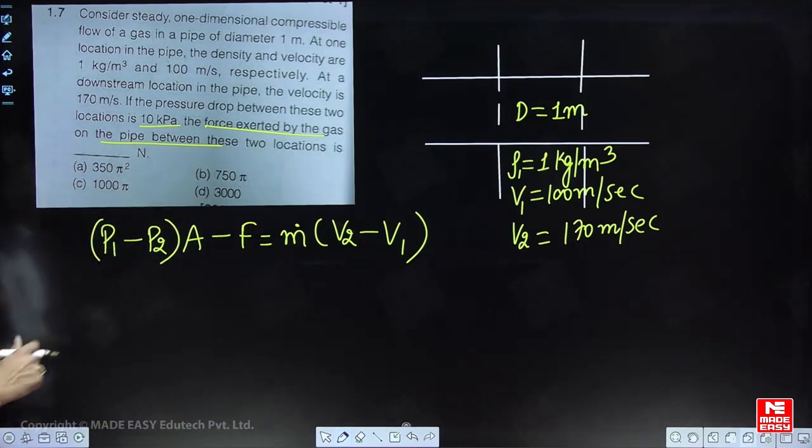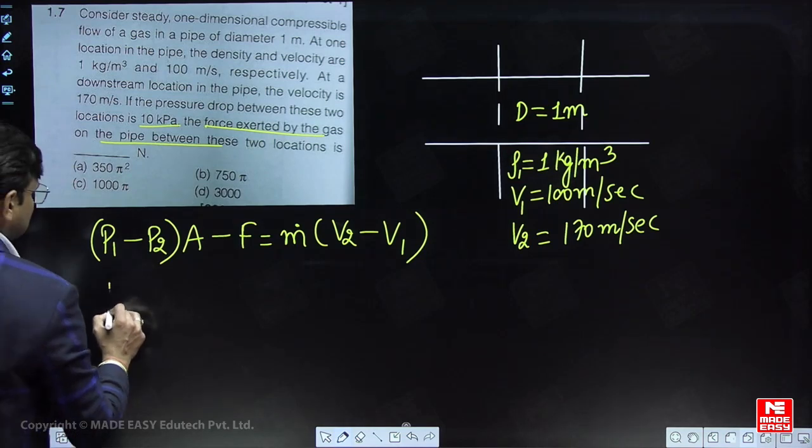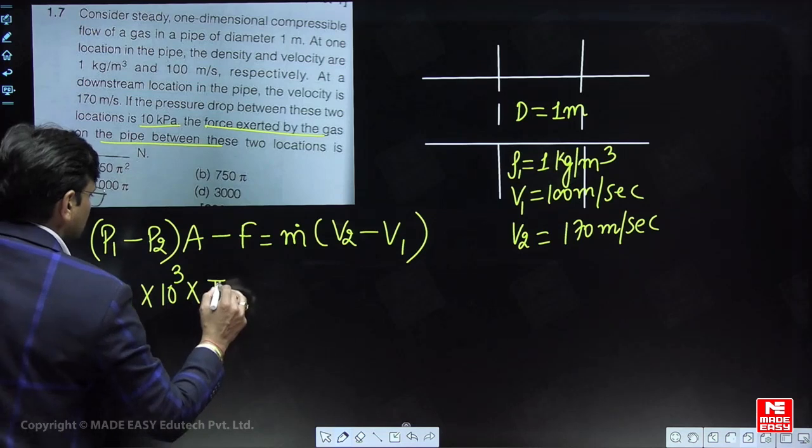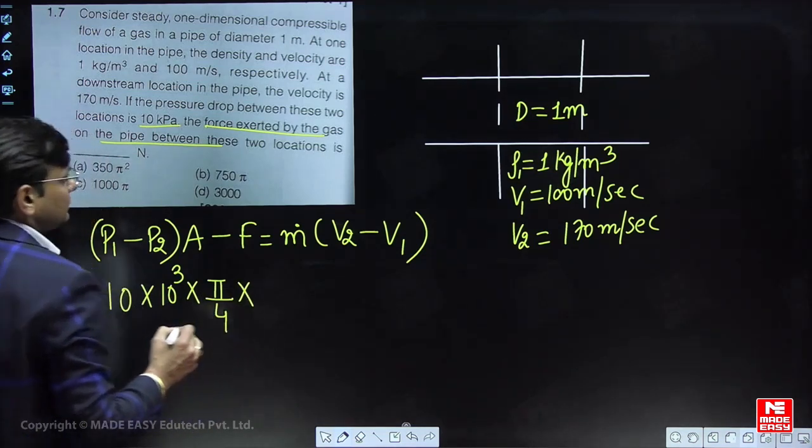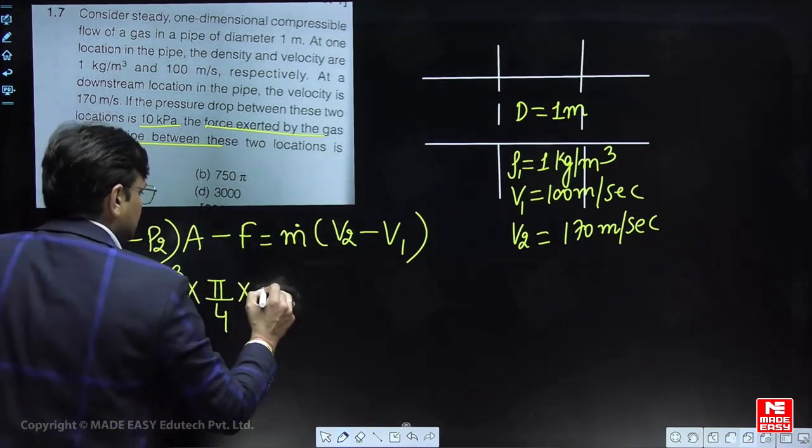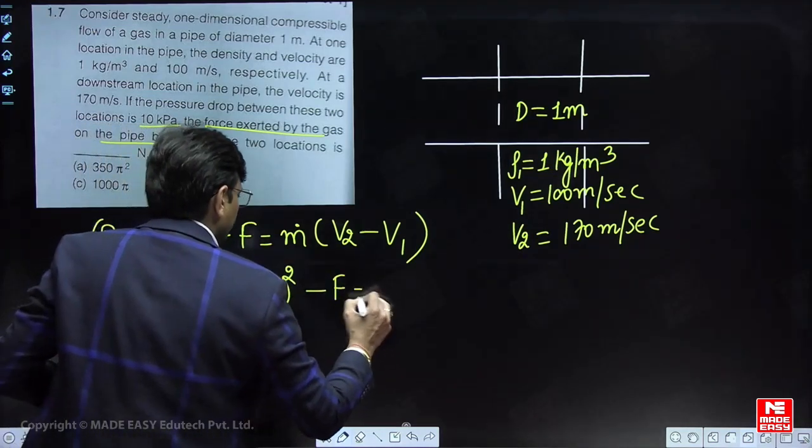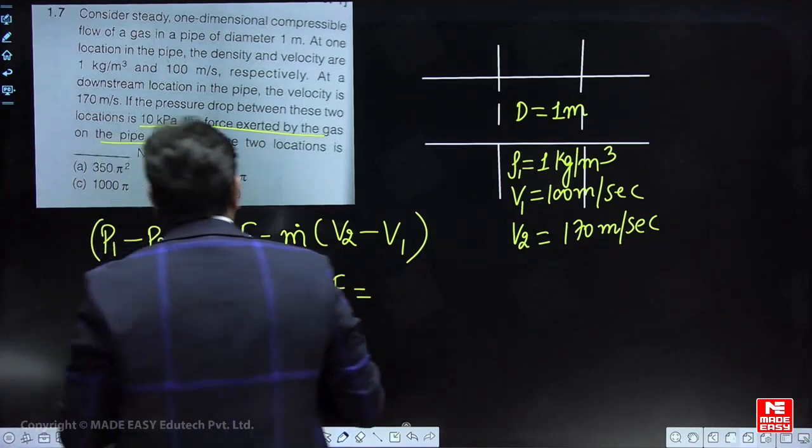The pressure drop is given as 10 kilo Pascal. Convert into basic unit: 10 × 10³. Area = π/4 D², the diameter is already given in the question as 1.